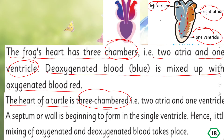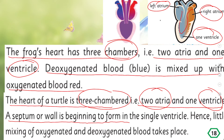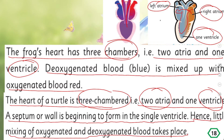The heart of a turtle is also three-chambered: two atria and one ventricle, similar to the frog. However, in the turtle's heart a septum or wall is beginning to form in the single ventricle. This septum is developing to separate the chambers so that oxygenated and deoxygenated blood do not mix. Because the septum is not fully formed, only very little mixing of oxygenated and deoxygenated blood still takes place.